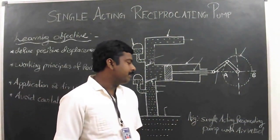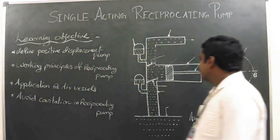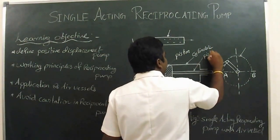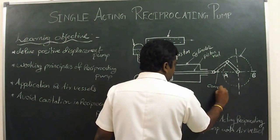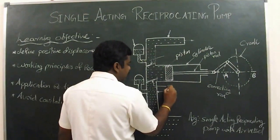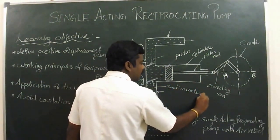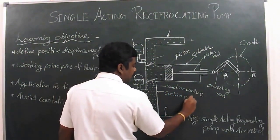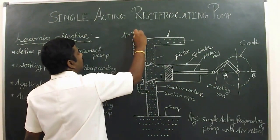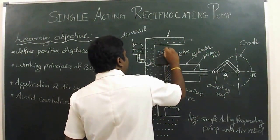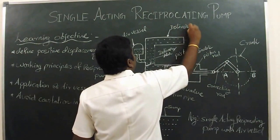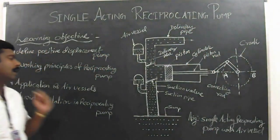Now we are going to discuss the single-acting reciprocating pump. The figure shows the single-acting reciprocating pump with air vessels. The main components are: piston, cylinder, piston rod, connecting rod, crank, suction valve, air vessel, and delivery valve.